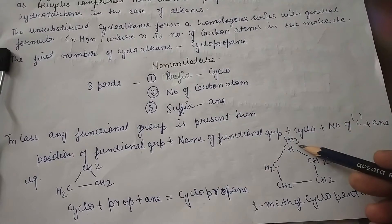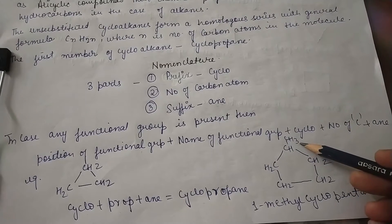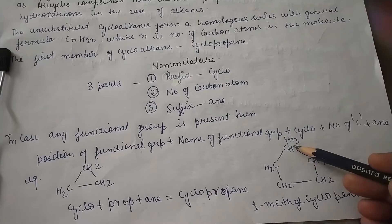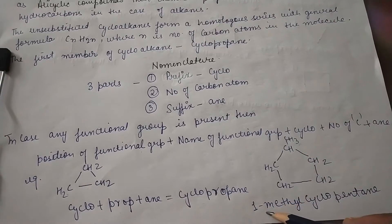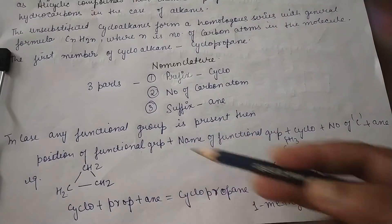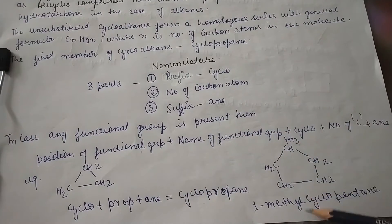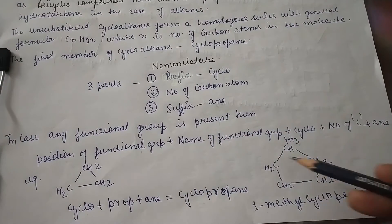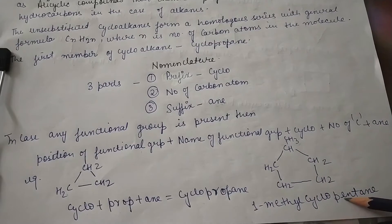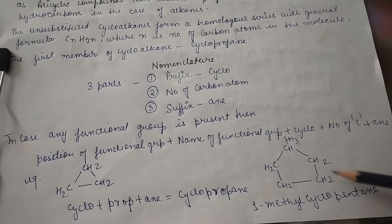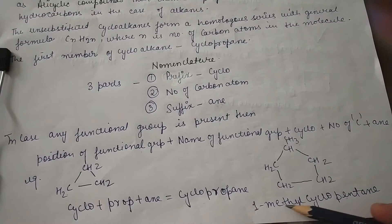Another example: here a methyl group is present, so we mark this position as first. The methyl group is at position 1, so we write 1, then methyl, then cyclo as prefix, then 'pent' for 5 carbons, then 'ane'. So it becomes 1-methylcyclopentane.